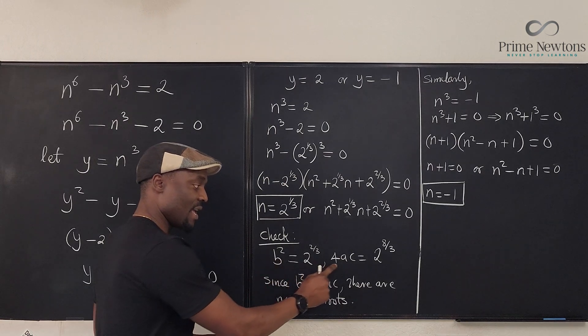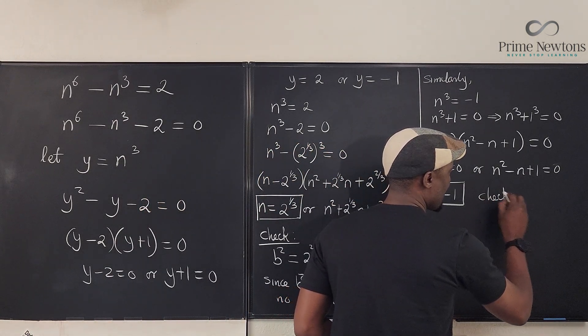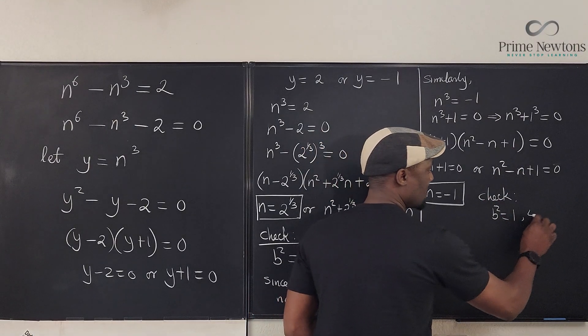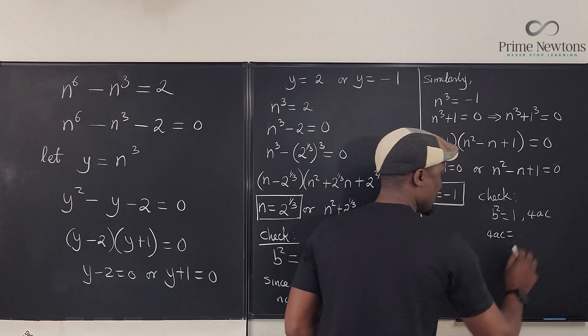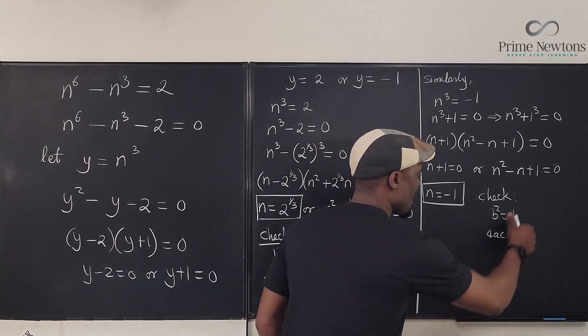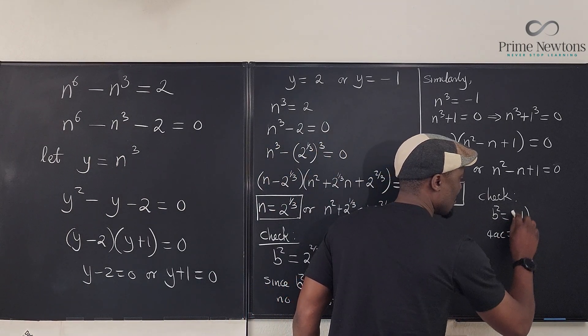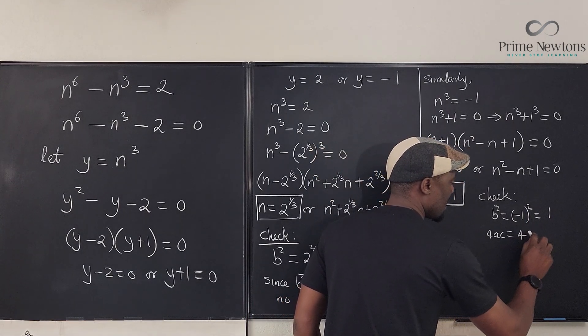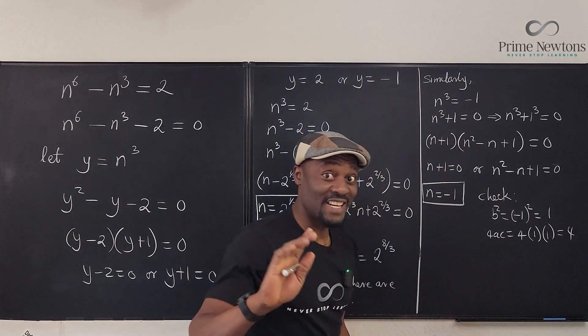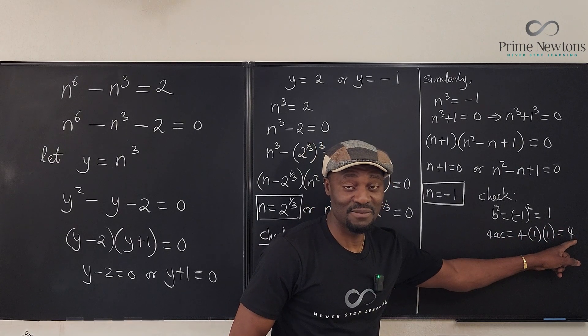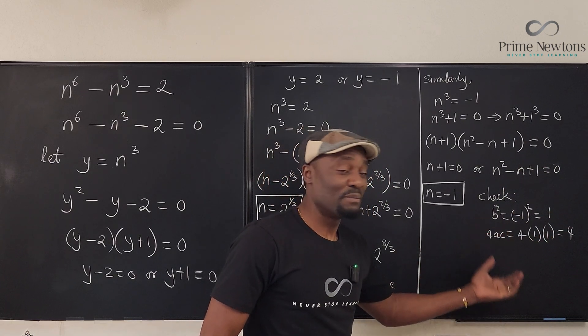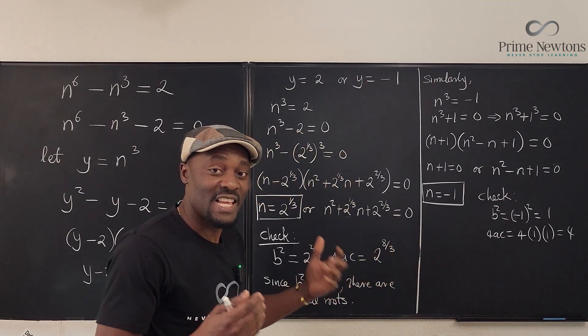Remember, the check is always b^2 and 4ac. So, check. We're checking this one. What is b squared? b^2 is (-1)^2, which is 1. So, what is 4ac? Let me rewrite this as (-1)^2, which is 1. And 4ac is going to be 4 times a is 1. And what is c? c is 1. Oh, it gives us 4. So, as you can see, again, b^2 is less than 4ac. 1 is less than 4. So, if you solve this using the quadratic formula, you will not get a real answer. Oh, that's sad. It's going to be complex.